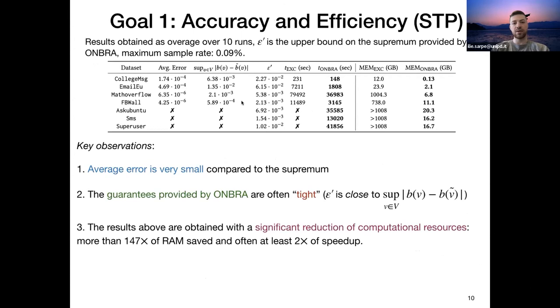Over the lines, we computed the following table, where we have for each dataset the average error, the supremum of the errors computed by using the exact values, the guarantees provided by ONBRA, and the time and memory used. So what we see is that the average error is often really small. The guarantees provided by ONBRA are tight since the supremum is... Sorry, you have one minute. Thank you. And there is a significant reduction in computational resources.